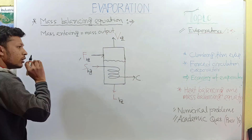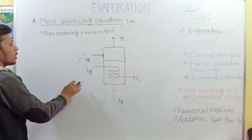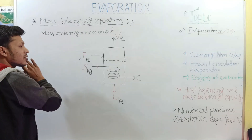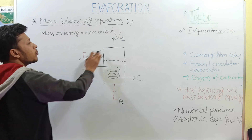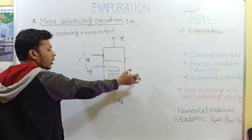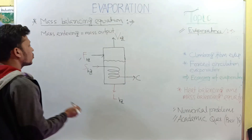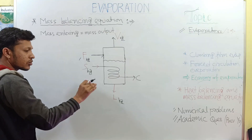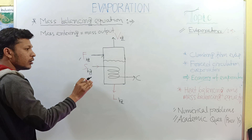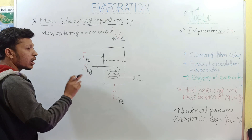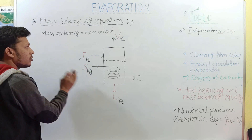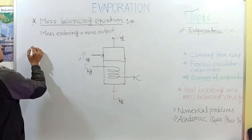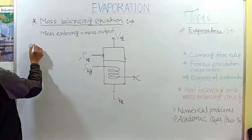Mass entering equals mass output. Mass in feed equals mass in vapor plus mass in product. Symbolically: F = V + L. This is the mass balancing equation.